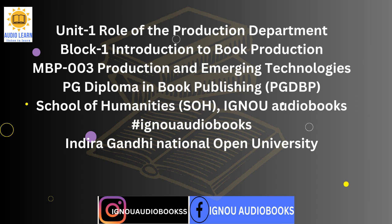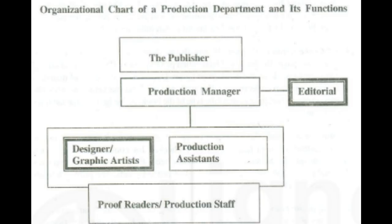A look at the organizational chart of the production section will help you understand the various production functions from planning, designing, estimating, scheduling, purchasing materials to supervising the whole process of converting a manuscript into a finished book. The bordered blocks indicate that design and graphic work is sometimes outsourced. The editorial section remains in close touch with the production section during the process of book production. The production manager supervises and directs the various jobs done in the manufacture of the book, maintaining a liaison with editors and marketing people, and is overall responsible for the purchase of materials and provision of services from outside agencies.